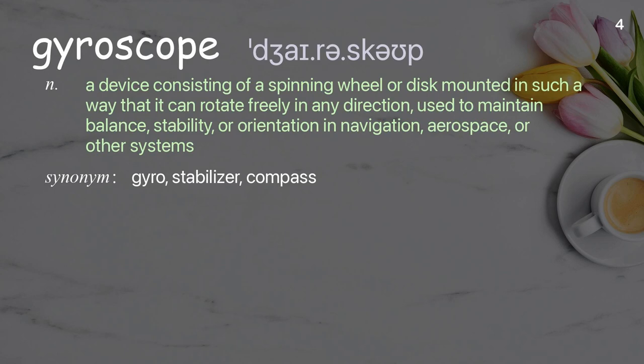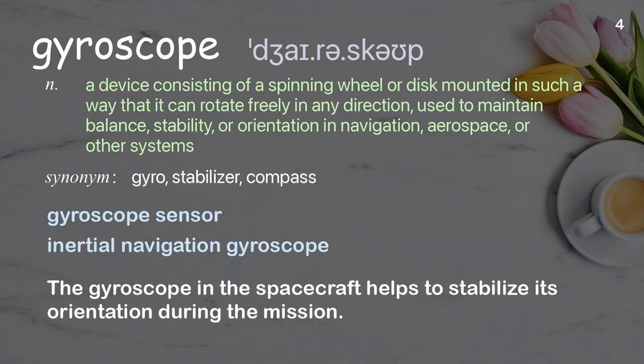Gyroscope: a device consisting of a spinning wheel or disc mounted so that it can rotate freely in any direction, used to maintain balance, stability, or orientation in navigation, aerospace, or other systems. Examples: gyroscope sensor, inertial navigation gyroscope. The gyroscope in the spacecraft helps to stabilize its orientation during the mission.